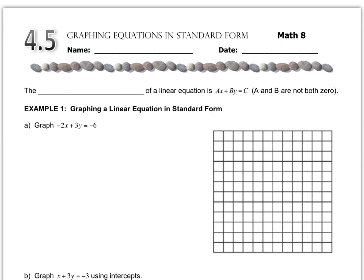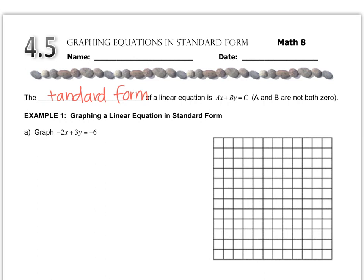And this technique is called standard form. The technique for standard form is graphing using the intercepts, and this is what standard form looks like algebraically: Ax + By = C, where A, B, and C are numbers and we have x and y. So it kind of looks like this equation in letter a.